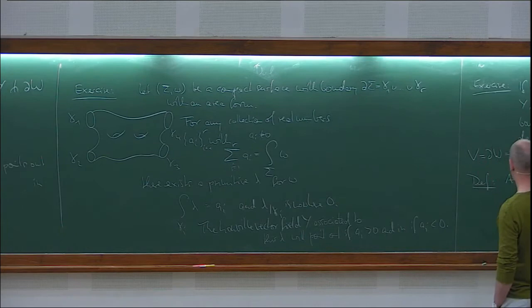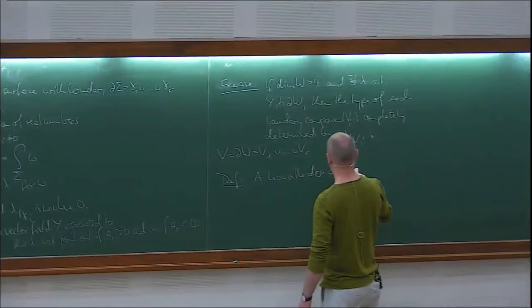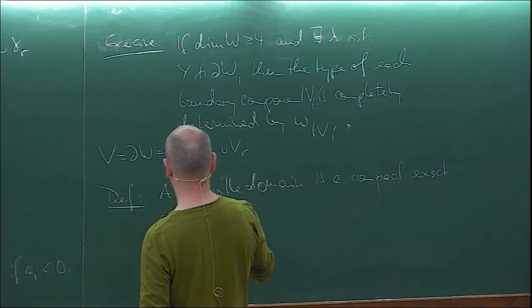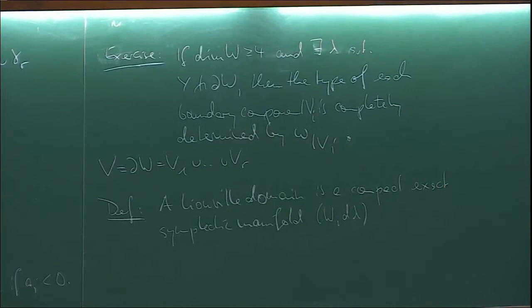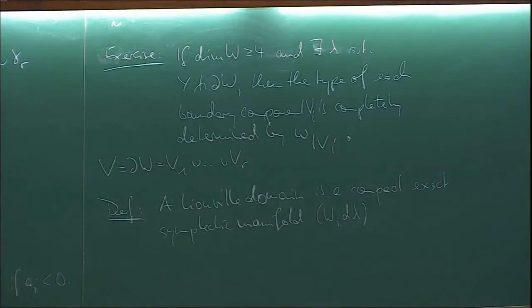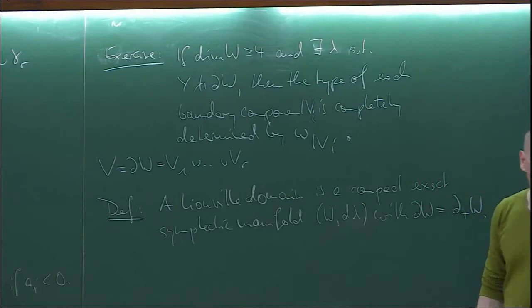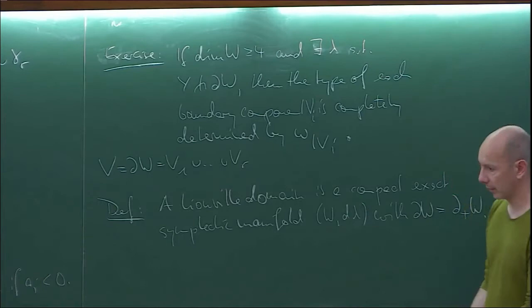A Liouville domain is a compact exact symplectic manifold (W, d lambda) such that the negative part of the boundary — the part where the dual vector field points in — is empty. So it only has positive boundary. Notice that once I say compact and exact, it must have boundary, because on a closed symplectic manifold omega defines a non-trivial cohomology class, so it can never be exact.